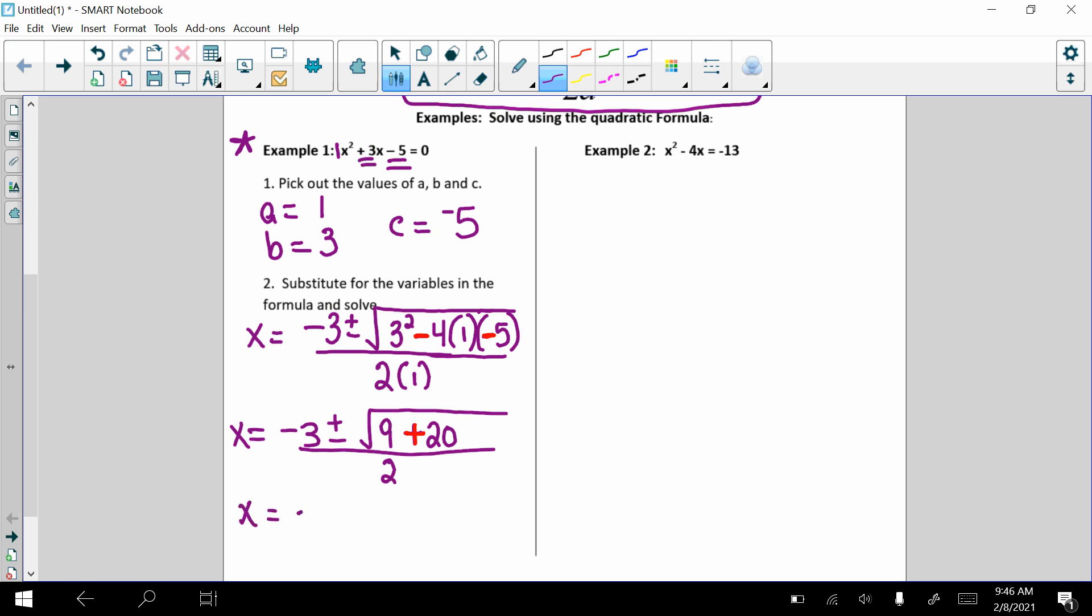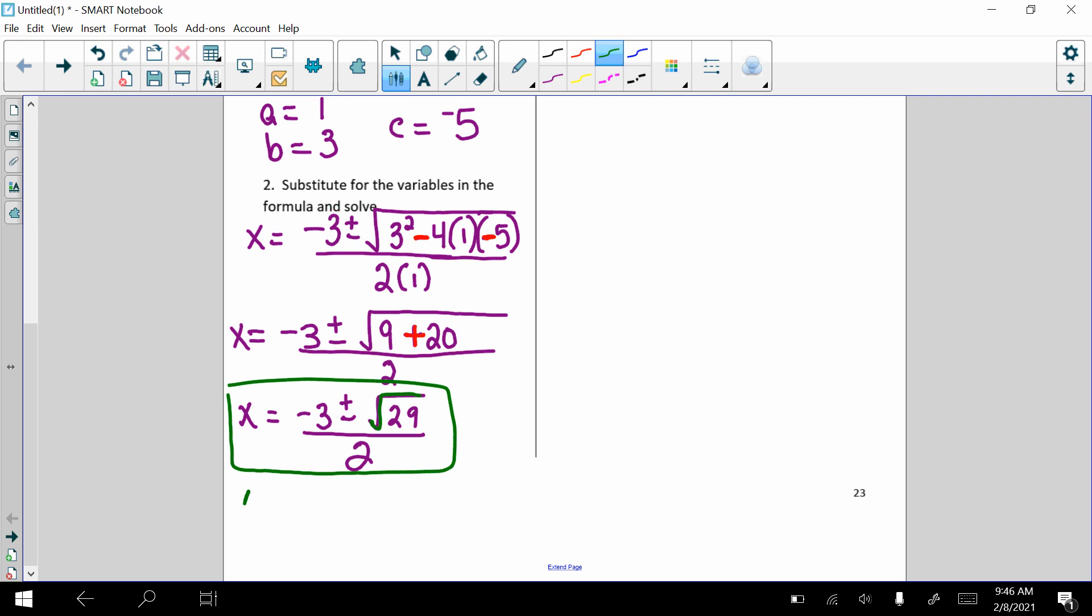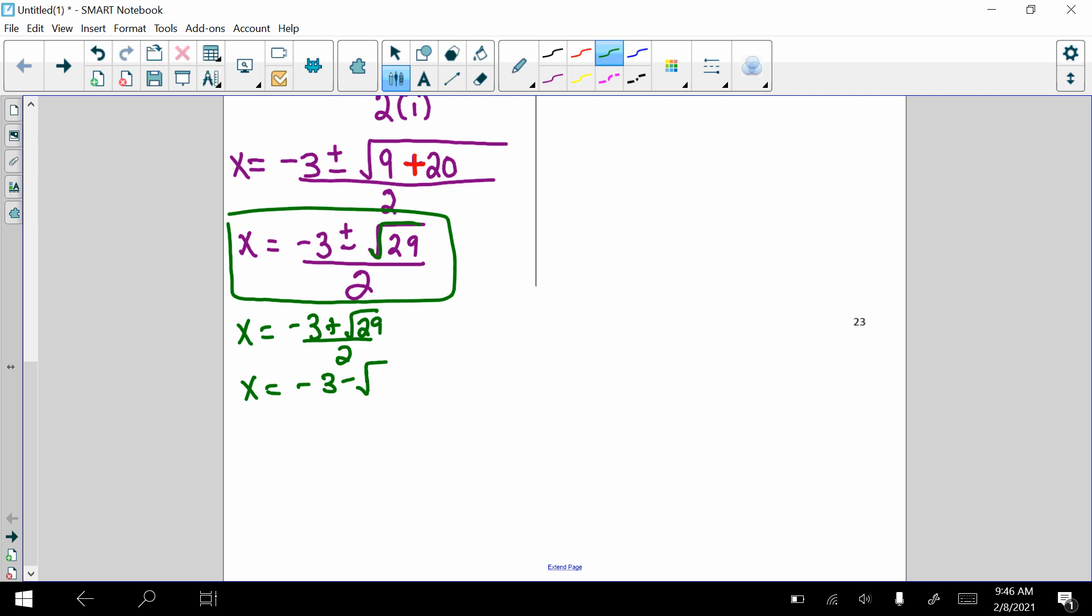Only a little bit more to do here. Negative 3 plus or minus the square root of 29, all divided by 2. Now you have to ask yourself, can I do anything to the value under the radical? Can I simplify the square root of 29? You can't. So this is your exact set of answers. And notice that you have two answers. We have, and I'm going to write them separately, negative 3 plus the square root of 29 divided by 2, and negative 3 minus the square root of 29 divided by 2.